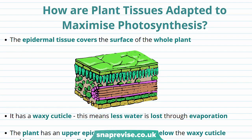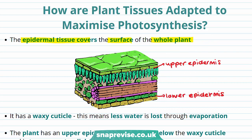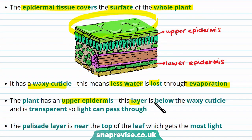Plants want to make as much food as possible — they want to maximise photosynthesis. So how are plant tissues adapted to maximise photosynthesis? Let's look at the epidermal tissue first. The epidermal tissue covers the surface of the whole plant. There's an upper epidermis and a lower epidermis. The epidermal tissues are covered by something called a waxy cuticle, which means that less water is lost through evaporation. The upper epidermis is below the waxy cuticle and this layer is transparent so light can pass through to the next layer of cells, the palisade cells.